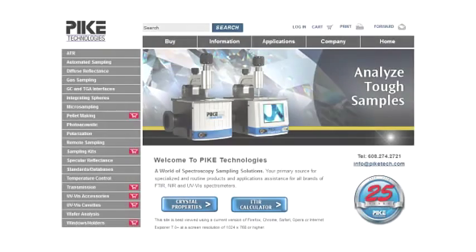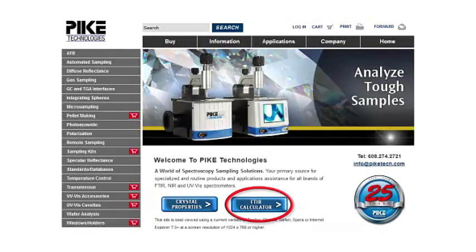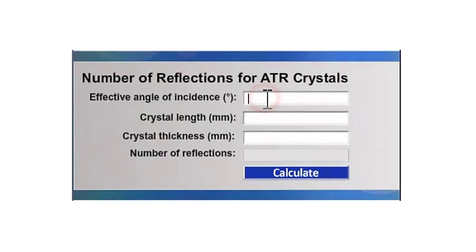It's easily calculated using Pike's FTIR calculator found on the homepage of our website. As a quick example, the number of reflections for an 80 by 10 by 4 mm germanium ATR crystal is 10.